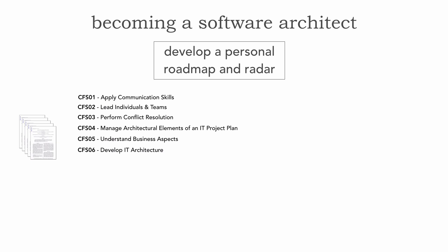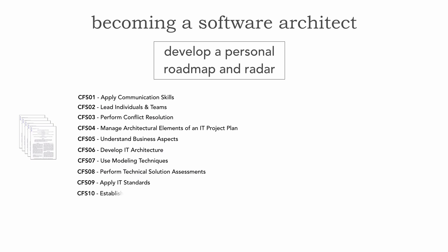Developing an IT architecture covers architectural elements such as components or what architecture style will be used, which we'll see in a future lesson within this roadmap. It's also about using modeling techniques as well as performing technical solution assessments — especially with CFS 08, which is really about analyzing and assessing an architecture, which is absolutely vital and one of the core competencies to develop. It also includes applying IT standards to various projects where applicable.